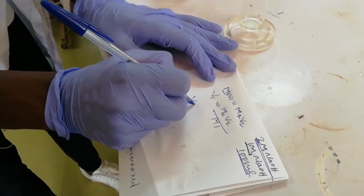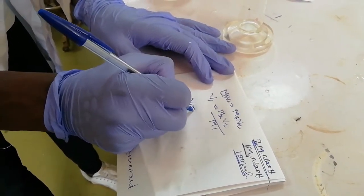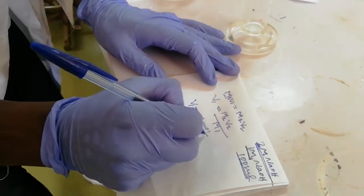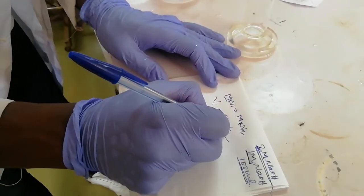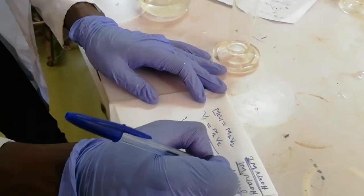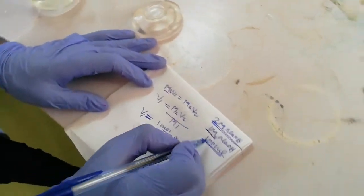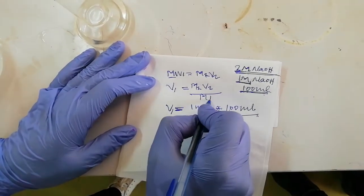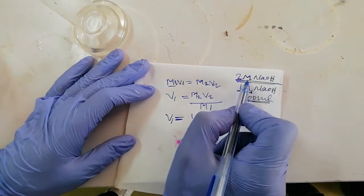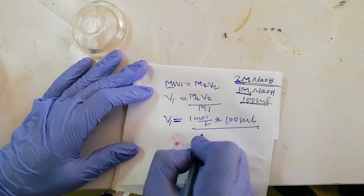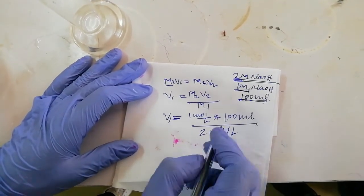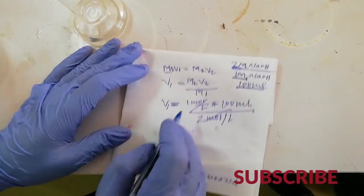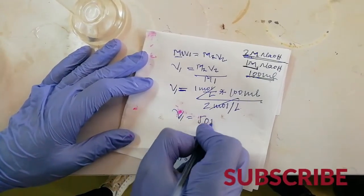V1 = (1 mol/L × 100 mL) / (2 mol/L). Mol per liter is cancelled by mol per liter. This gives 1 × 100 / 2 = 50. So V1 = 50 mL. That means we are going to take 50 mL of 2-molarity sodium hydroxide solution to prepare 1-molarity sodium hydroxide solution in 100 mL of water.